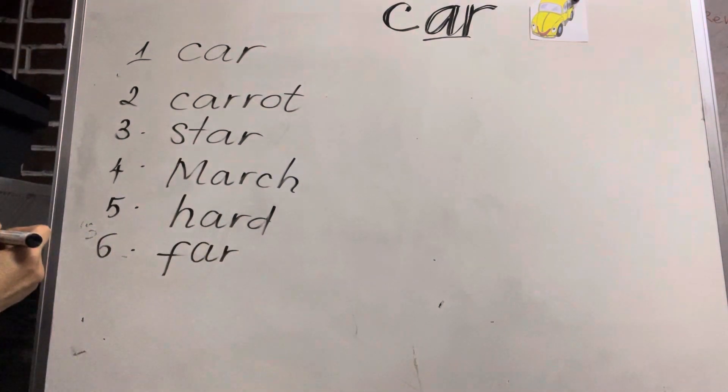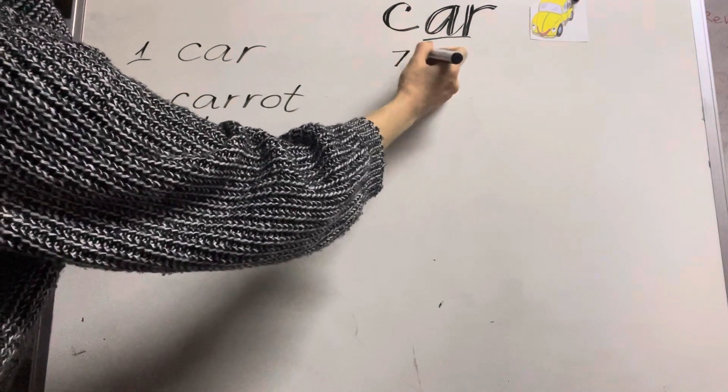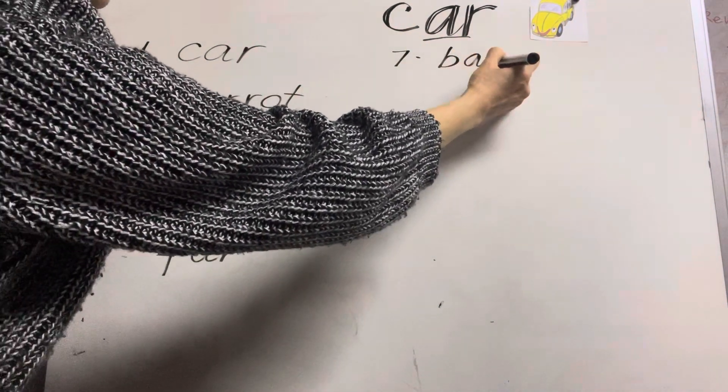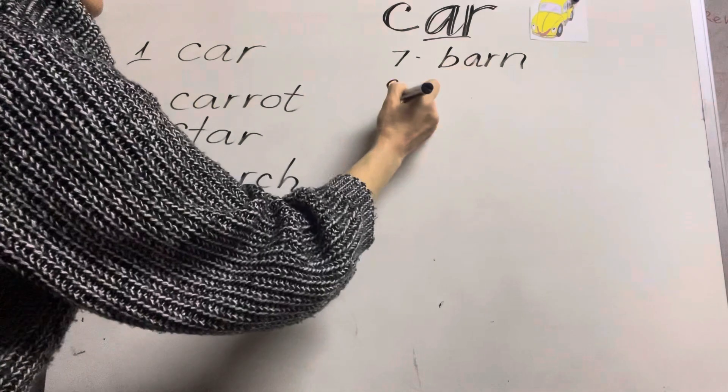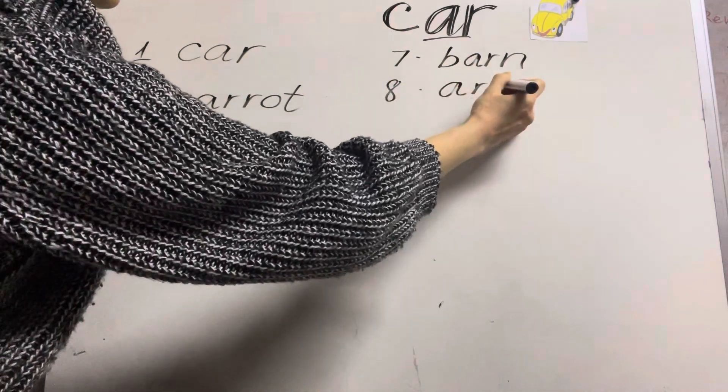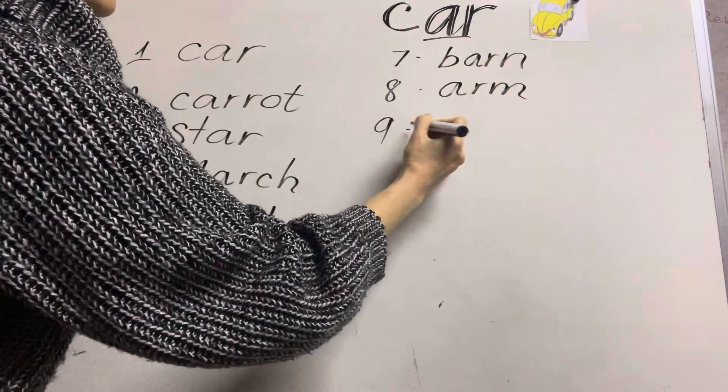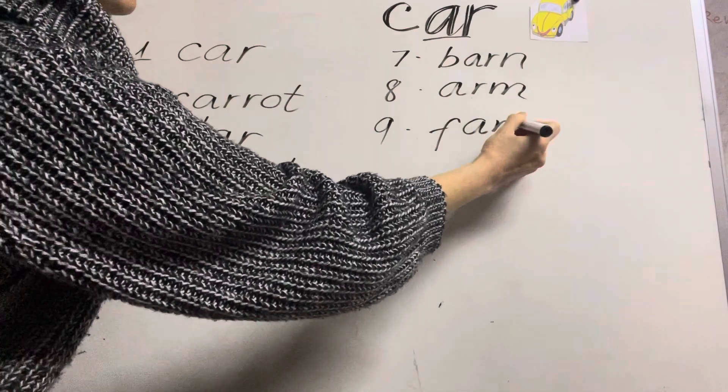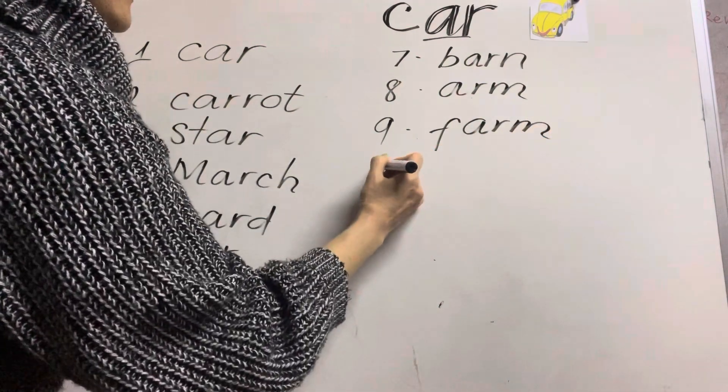Seven is barn. Eight is arm. Nine is farm. Ten is farmer.